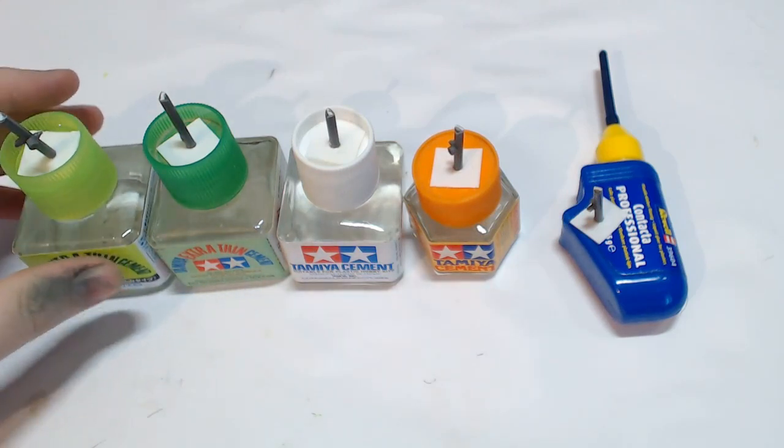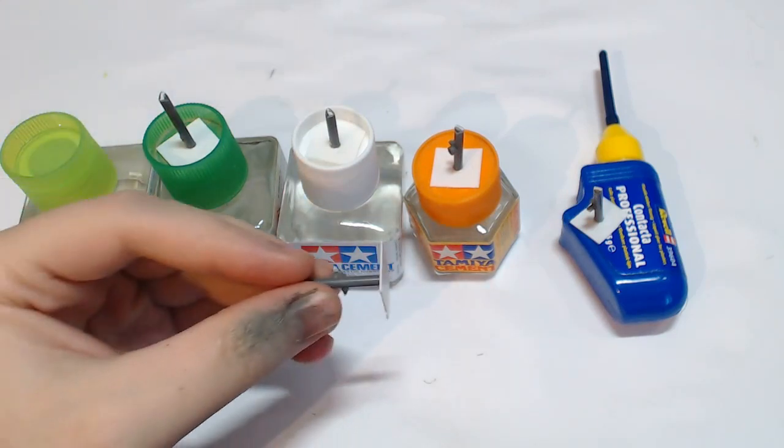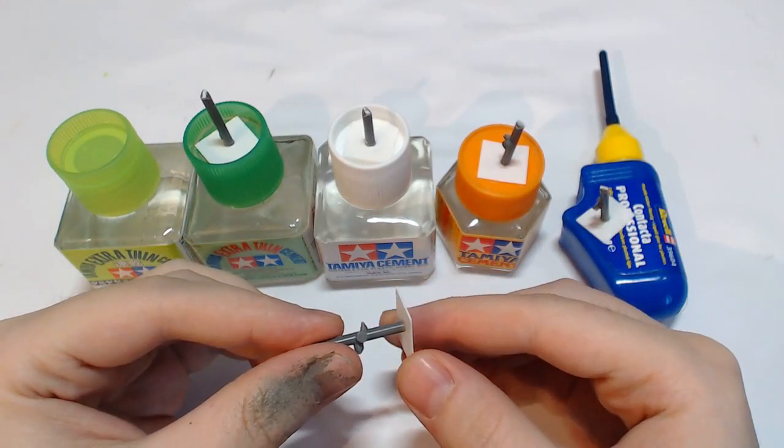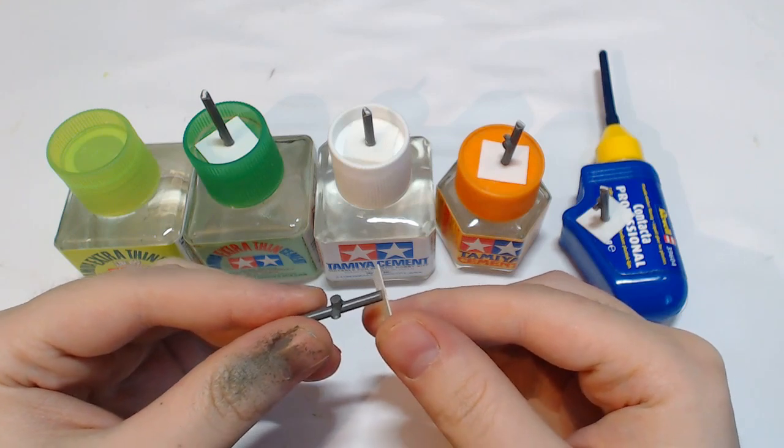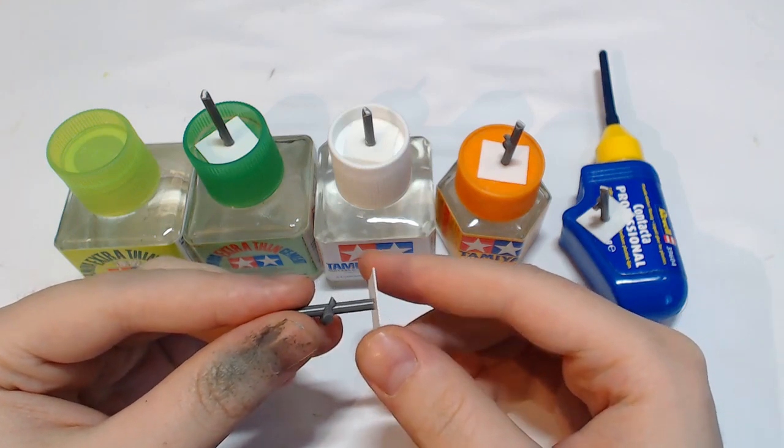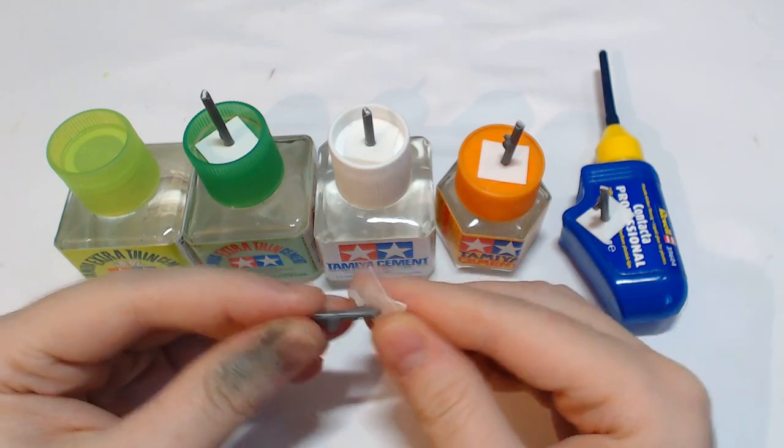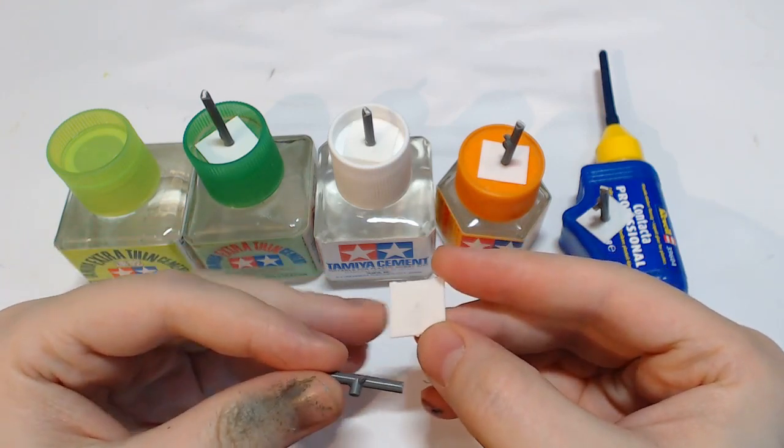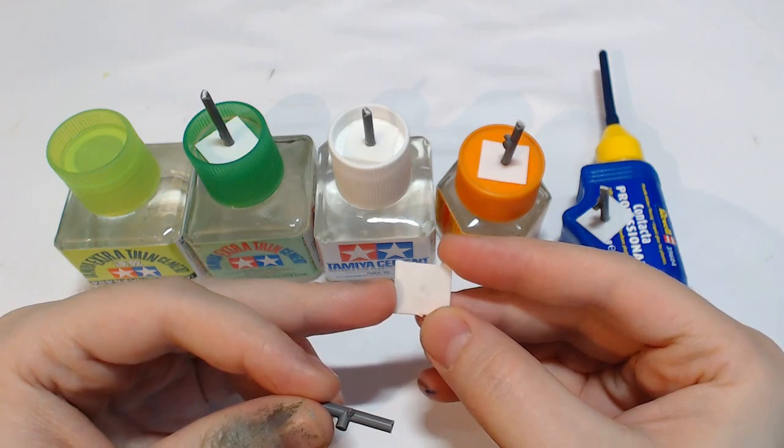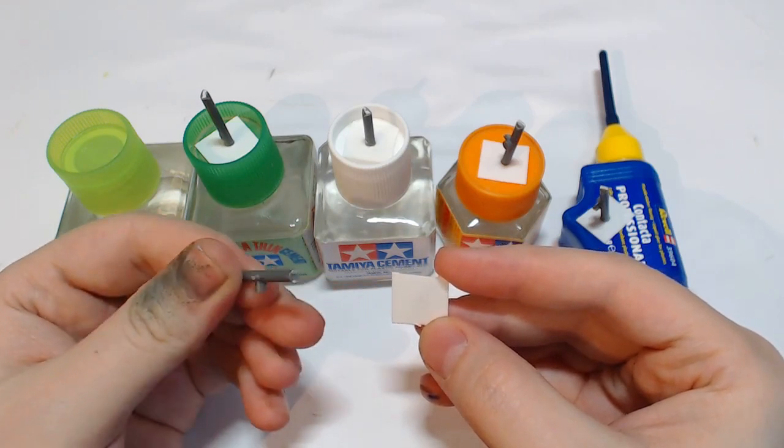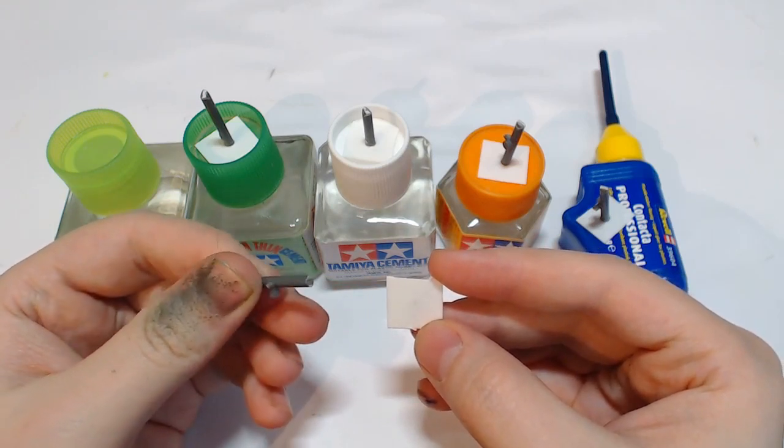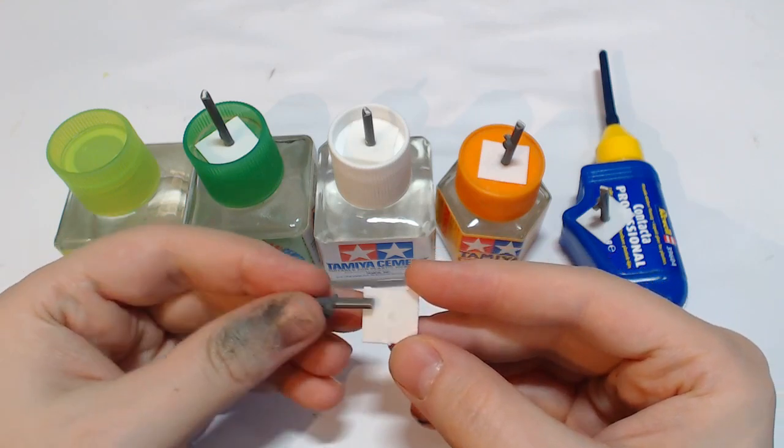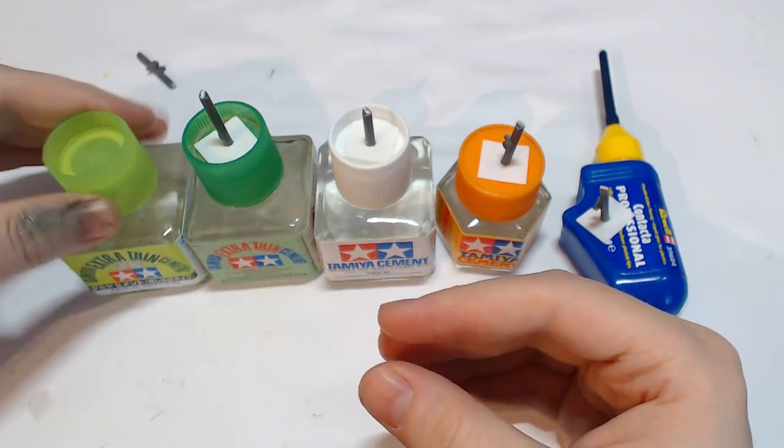So we'll first take a look at the extra thin. And the extra thin itself, it dries very, very quickly. We're talking 20, 30 seconds at most. And unfortunately, you can see for the bond, it's not very strong. It snaps very easily. It didn't really bond with the plastic at all. This is just standard plastic card, and this is just a piece of sprue I cut off from a Wargames Factory model. So that didn't bond at all. I would consider this complete junk.